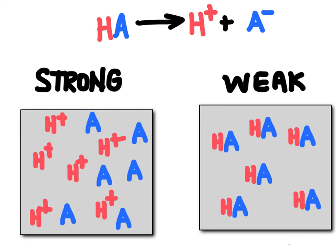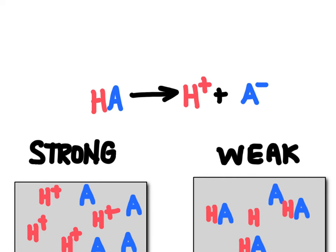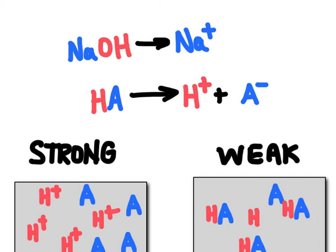For a weak acid or base, only some of those particles are going to split apart. With our weak acid, maybe only one will actually split whereas the rest stay together, so we don't get as many H+ ions as a strong acid. With a base, we're not concerned with H+, but with hydroxide — this is what makes a base a base. Usually we have some kind of metal, like sodium, attached to that hydroxide. When it dissociates, we get the metal ion and the hydroxide. The more hydroxide ions we get into solution, the stronger the base is going to be.